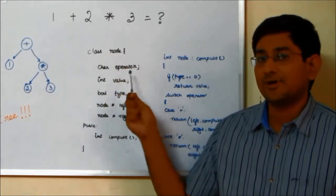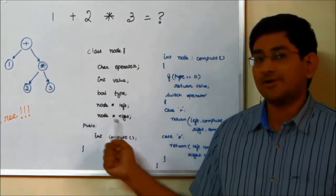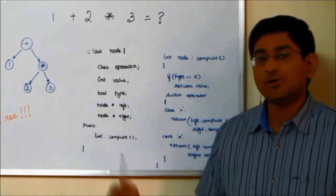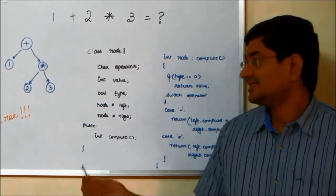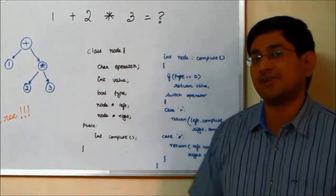1 plus 2 into 3, and I just have to store the value. I write a class about it: class node, a char operator, int value, bool type, and then a node left and a node right. And I go about computing it. This is a normal class that we go about writing for this type of a tree structure.